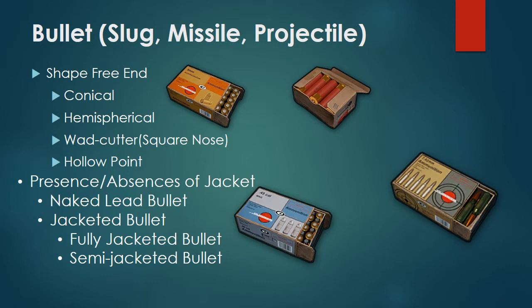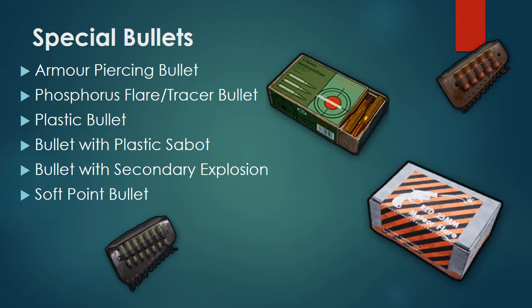The bullet — also called slug, missile, or projectile — is shaped at its free end. Shapes include conical, hemispherical, wad-cutter or square nose, and hollow point. By jacket presence: naked or lead bullet, jacketed bullet, fully jacketed bullet, and semi-jacketed bullet. Special bullets include armor-piercing, phosphorus flare, tracer, plastic, bullet with plastic sabot, bullet with secondary explosion, and soft point bullet.